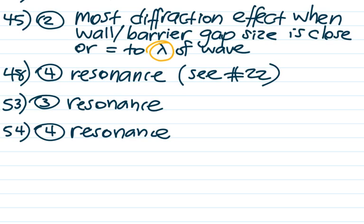Number 55 is the last question on this worksheet and it's about diffraction. A speaker is making sound and there's a gap — a doorway — with a student who does not have a direct line of sight to the speaker. You might think the student wouldn't hear anything, but you'd be wrong. Because of diffraction, the sound wraps around the opening, fills the room, and the student does hear the speaker. The answer is choice four: diffraction.